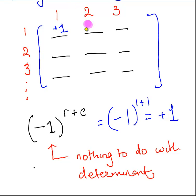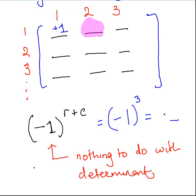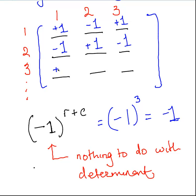Let's look at the next element. That would be minus 1 to the power of 1 plus 2, that is minus 1 cubed, and that is equal to minus 1. So this element would be minus 1. And going on: 1 plus 3 is equal to 4, minus 1 to the power of 4 is plus 1, and so on. So they actually alternate, starting in the top left corner and working outward.